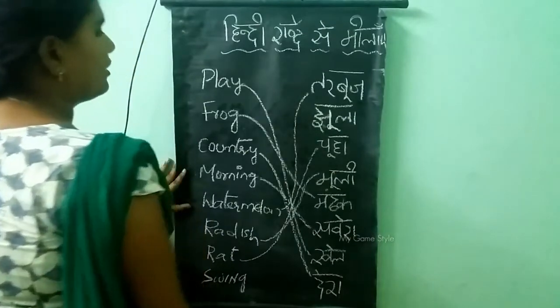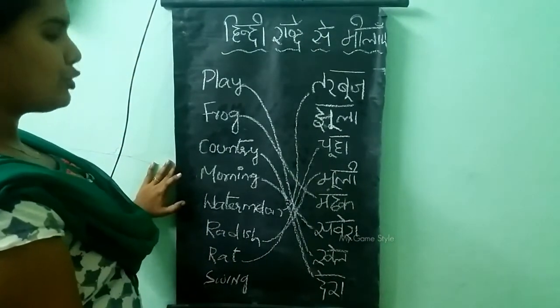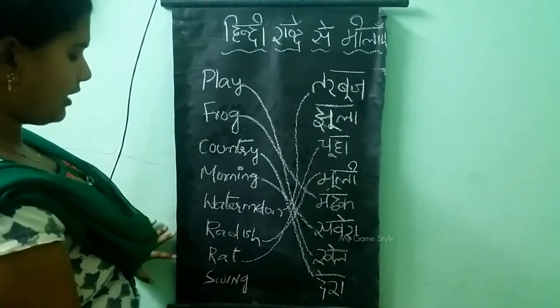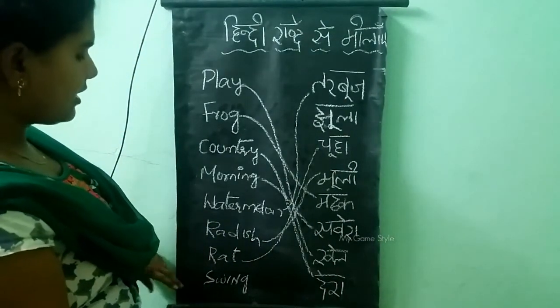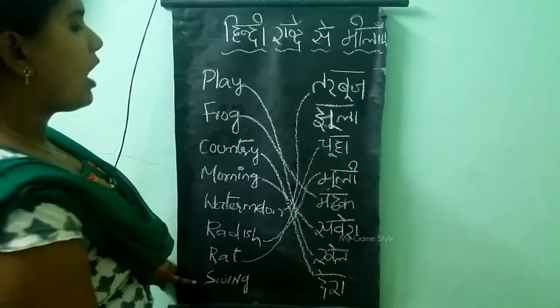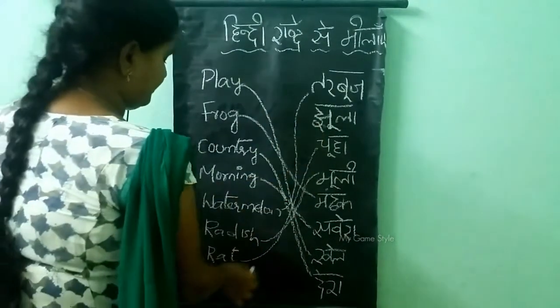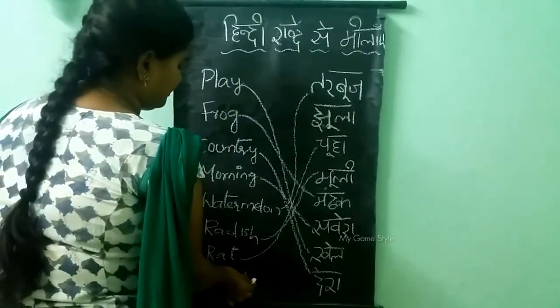Swing. Swing ko kahte hai Jula. The last word is Swing. Where is Jula? Here it is.